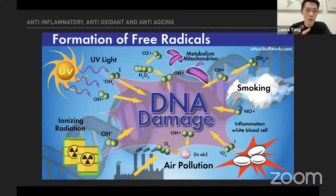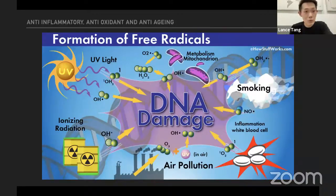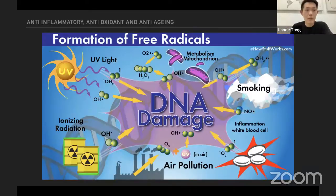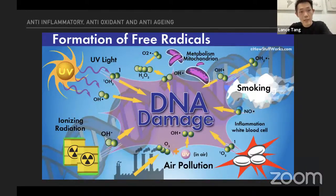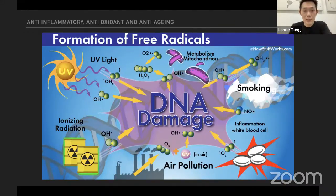For other free radical sources like smoking, we can reduce exposure through a good air filtration system at home and even in our car — for example, the Atmosphere drive. At home we can offer Atmosphere Sky or Atmosphere Mini for that extra layer of protection. Then inside our system, are we also boosting up our antioxidants? Smoking and air pollution are similar, and we also have a lot of ionizing radiation happening around us.